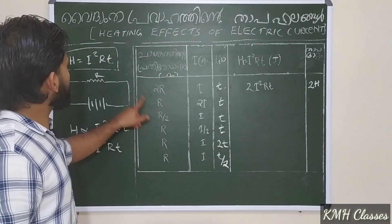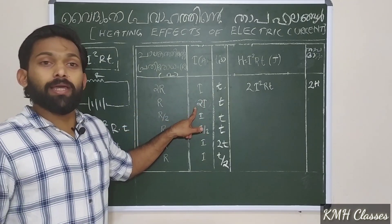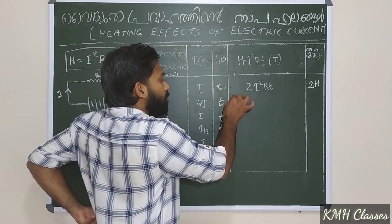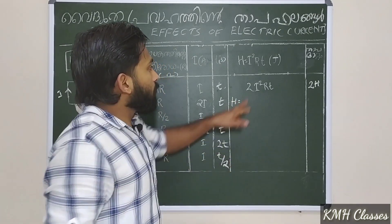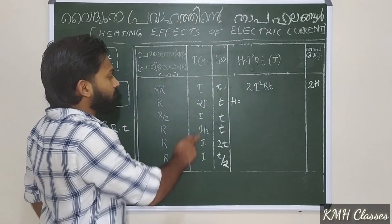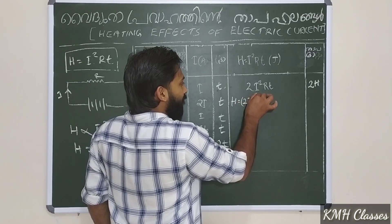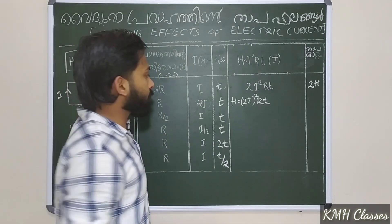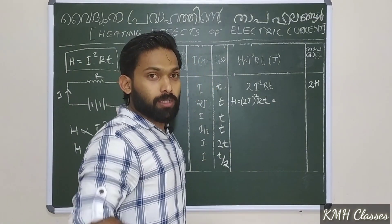In this case, we have the resistance R, we have the current I, we have the current 2I, and T. So now we have to write down here: I squared R T. Then with 2I — 2I squared into R T. How many squared? This one has 2I, it is labour same. So there are 4I squared.